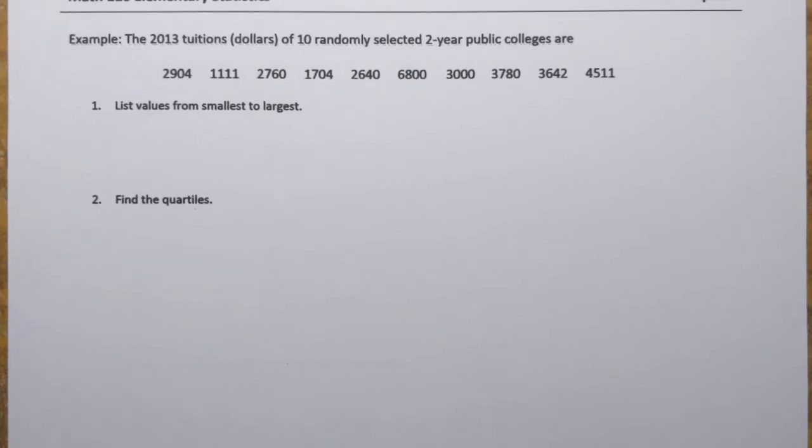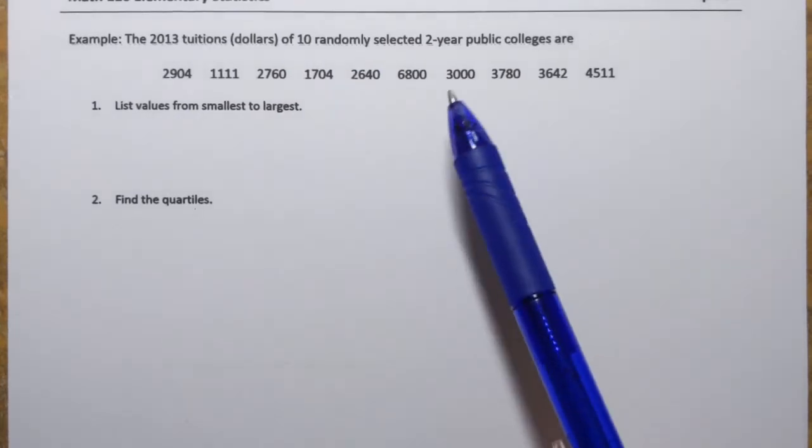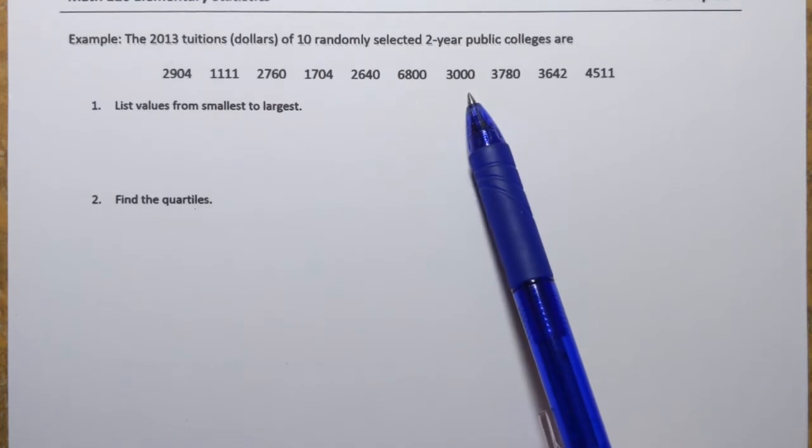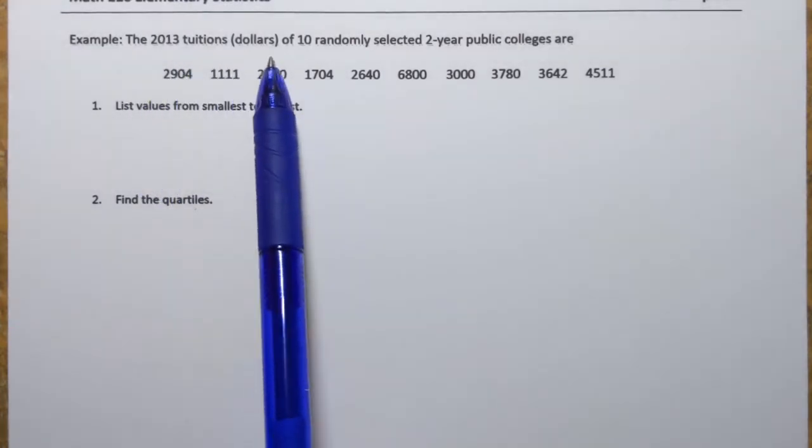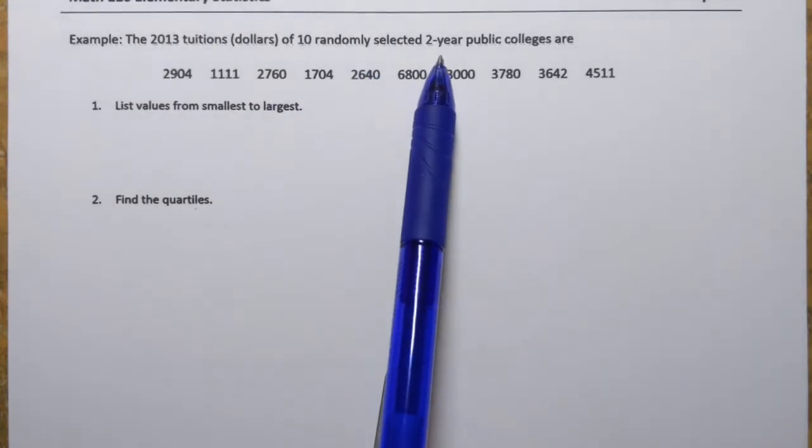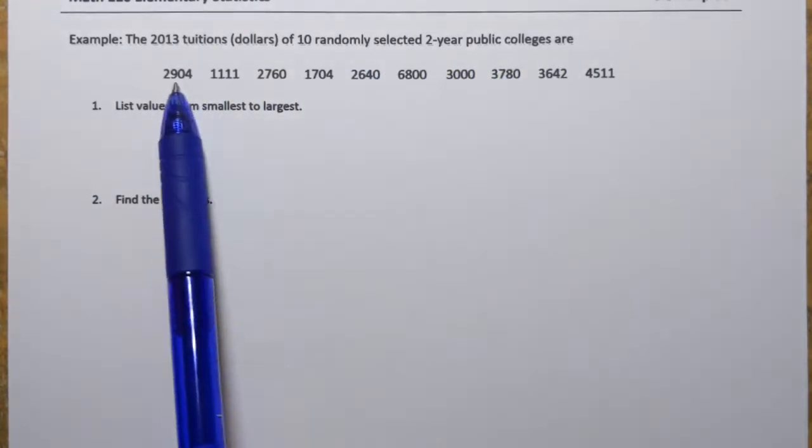Hi everyone! In this video we're going to construct a boxplot based on a given data set. Here we have the 2013 tuitions in dollars of 10 randomly selected two-year public colleges. Here they are.